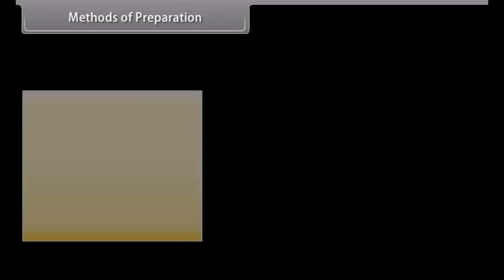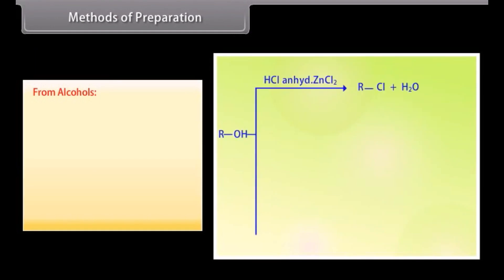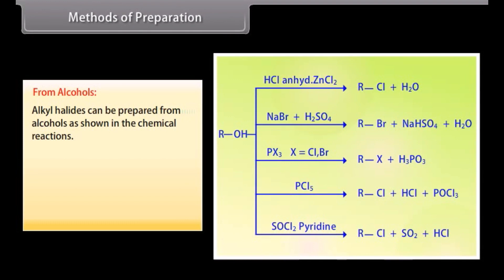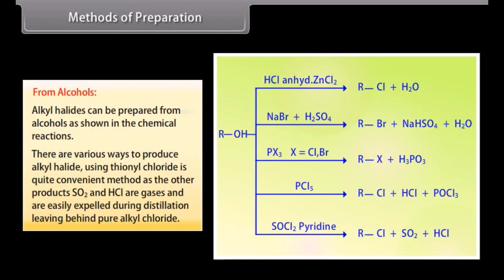Methods of preparation — from alcohols: Alkyl halides can be prepared from alcohols as shown in the chemical reactions. Using thionyl chloride is quite a convenient method, as the other products SO2 and HCl are gases and are easily expelled during distillation, leaving behind pure alkyl chloride.